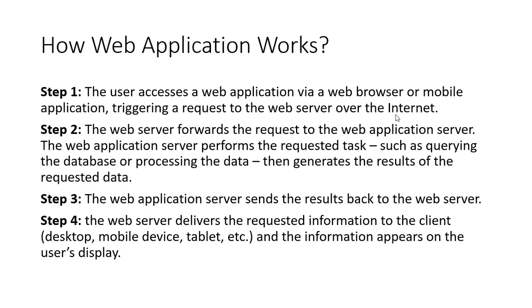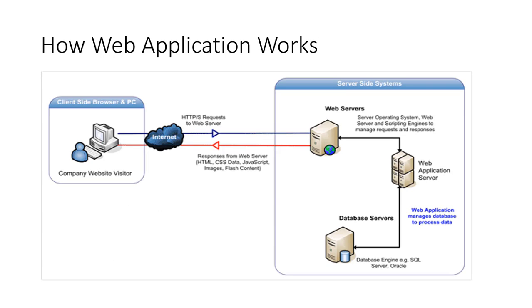Step four: the web server delivers the requested information to the client — desktop, mobile device, tablet, etc. — and the information appears on the user's display. As shown in the figure on screen: the client requests a resource from the web server; the web server passes it to the web application server where actual execution takes place; if data is needed, it is fetched from the database server and sent back to the web server, which then provides it to the client.